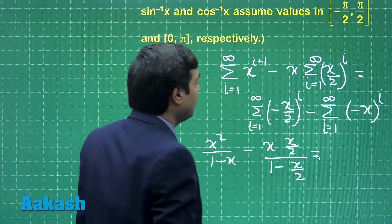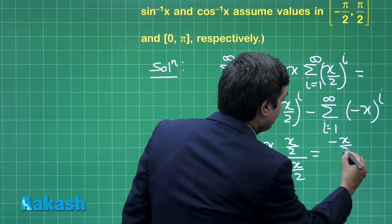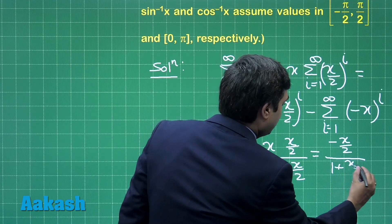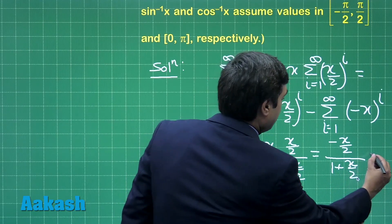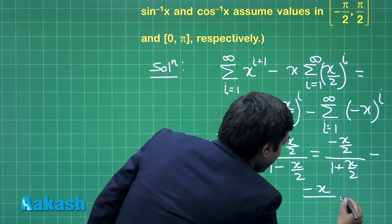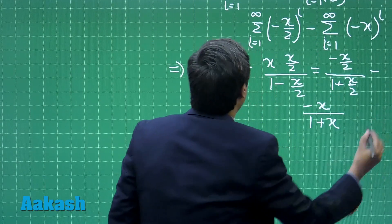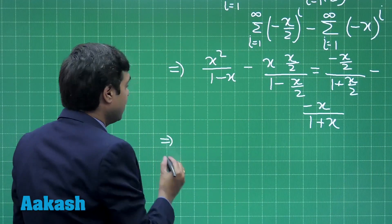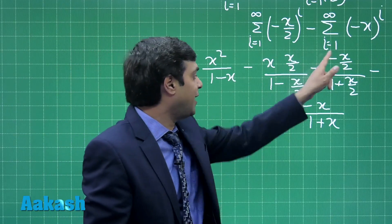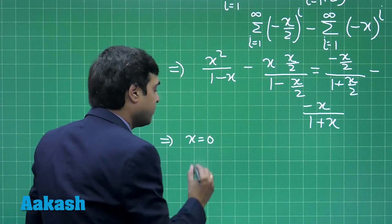This is equal to the second term that is minus x by 2 divided by 1 plus x by 2, minus minus x divided by 1 plus x. Simplify this equation, this gives us we can see that x square is common from the left hand side and x is common from the right hand side, meaning x equals 0 is one of the solutions.